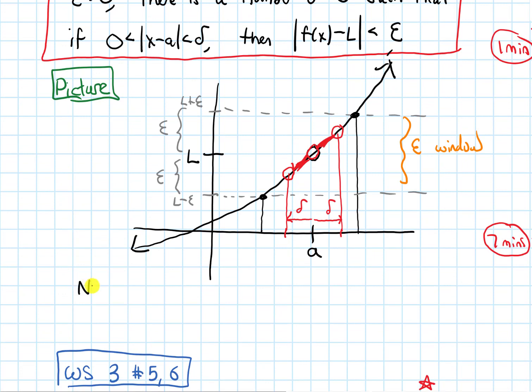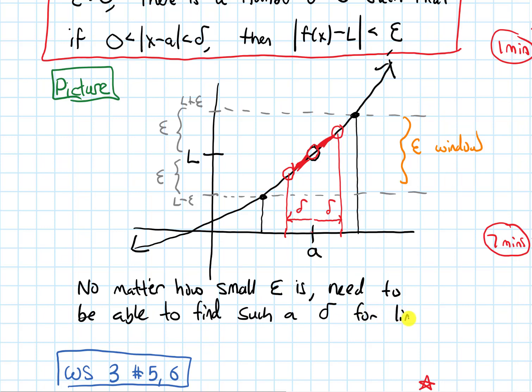So no matter how small our epsilon is, we need to be able to find such a delta for our limit to be L.